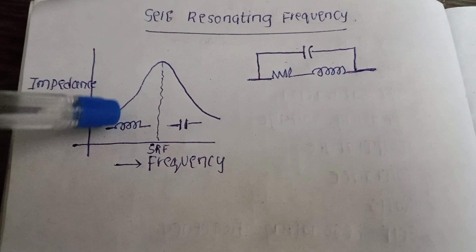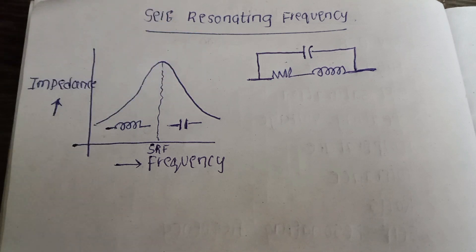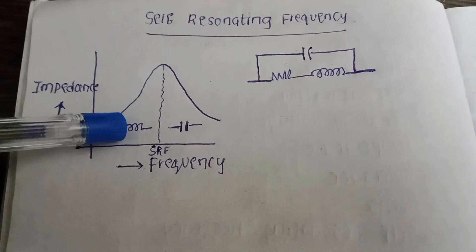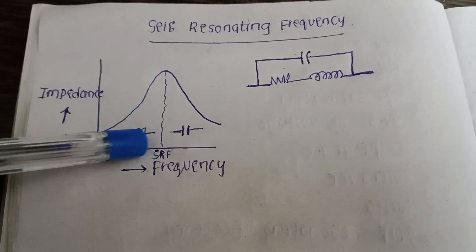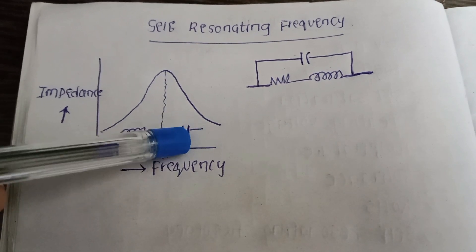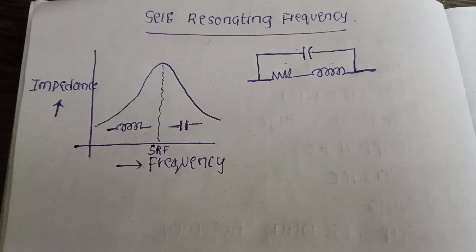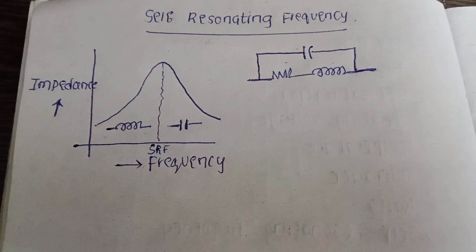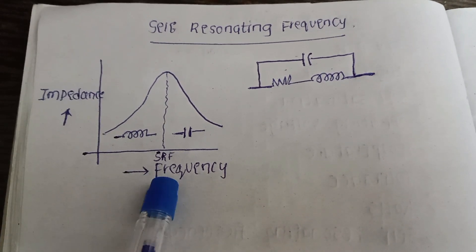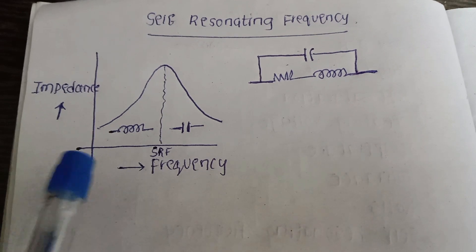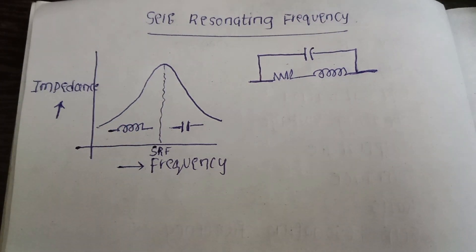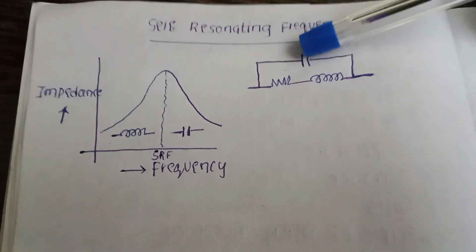Now, we see a curve here where you can see on the left side of this curve, we see an inductor symbol and a capacitor symbol on the right side. So what does it signify? What happens is, as the frequency increases for a given inductor, there will be a frequency at which this capacitor starts dominating.